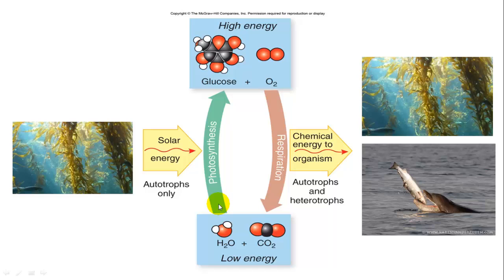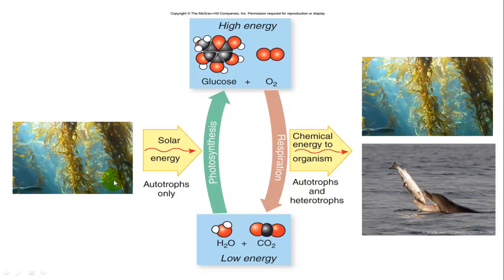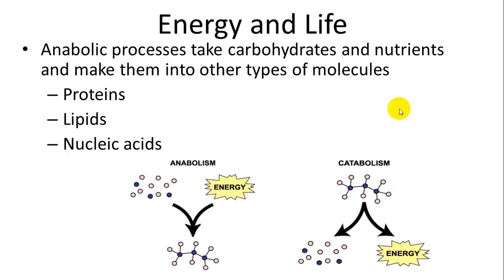These two processes — photosynthesis and respiration — take the same materials, glucose and oxygen, as either the starting or ending components, and are either capturing or releasing energy for use. Only plants, algae, and cyanobacteria — known as autotrophs — can photosynthesize. Everything needs to respire or undergo cellular respiration. So animals that eat plants and animals that eat other animals participate in respiration, but so do the plants themselves. Plants produce oxygen, but also use that oxygen in their own processes of respiration.